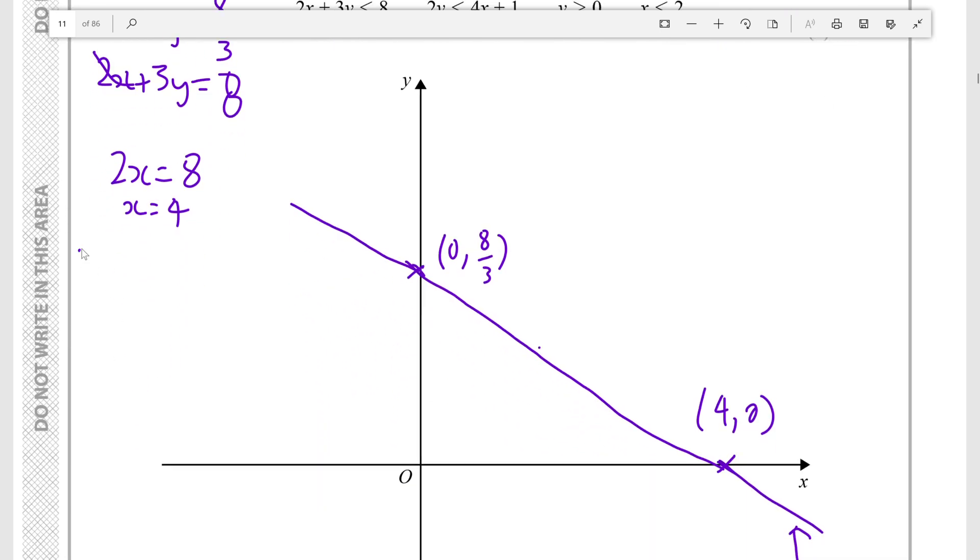Alright, so 2y is equal to 4x plus 1. When y equals 0, 4x plus 1 equals 0. Subtract 1 over both sides, 4x is minus 1. Divide both sides by 4, x is negative 1 over 4. So you just set y to 0 and solve the equation for x to find this point here, which is negative 1 over 4 and 0.